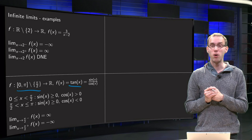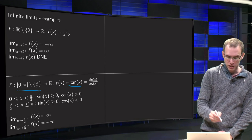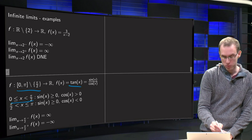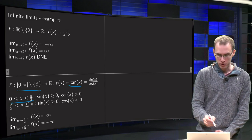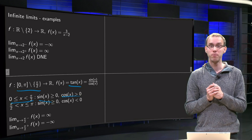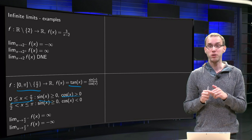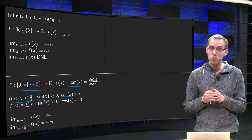Tangent of x equals sine of x over cosine x. So what do we know about sine and cosine in the domain? Well, if x is between zero and π over 2, the sine of x is positive and the cosine of x is positive as well. However, if you approach π over 2, the cosine of x will become very very small,